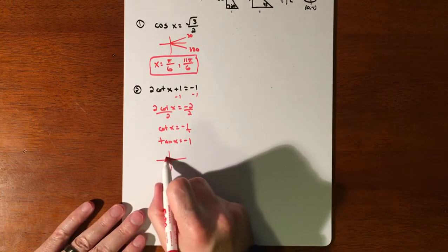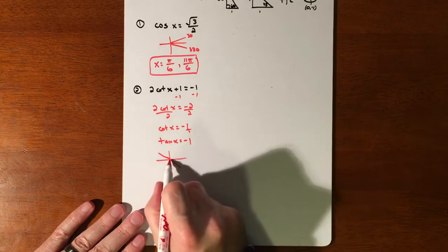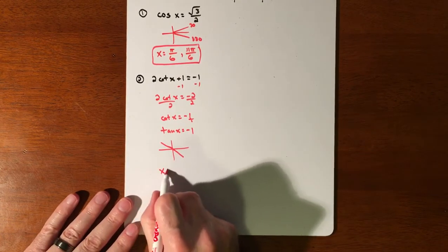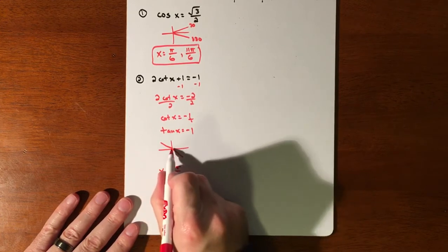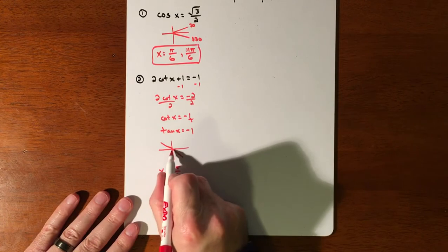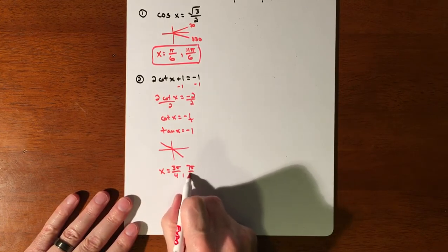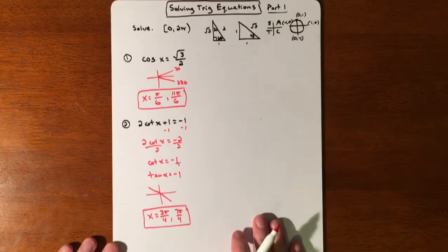We're looking at these two quadrants. So we're looking at a 45 in this quadrant and a 45 in this quadrant. So that's 3 pi over 4, and 7 pi over 4. There's our first two.